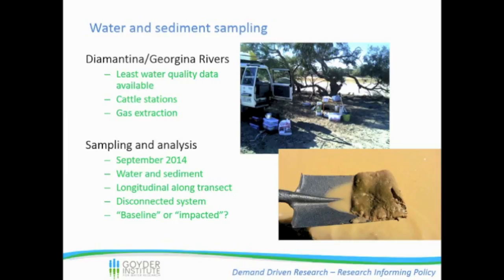We also know that there's extensive grazing in these regions, and gas extraction is expanding on the edges of the catchment as well. So in September last year, we went out and collected water and sediment samples. We collected sediments because, as far as we can see, there's very little to no data available for nutrient status. We did a longitudinal-type transect along the system, basically went as far north as we could and came south collecting samples along the way. Although it's important to stress this was a very disconnected system - we were driving hundreds of kilometres between waterways. And basically, we wanted to see whether the information we gathered could stack up against previous data, and whether this might be baseline levels, natural levels, or whether it was indicative of some impact in the region.